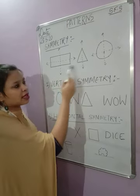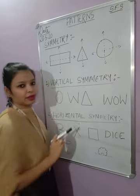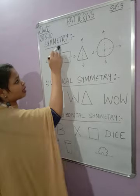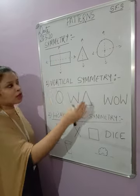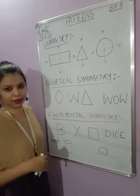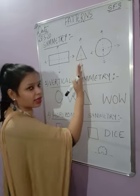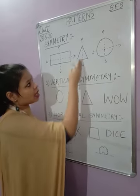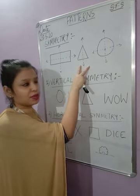I have taken some 2D figures here. The first is a rectangle, triangle, and circle. For the rectangle, when we divide along this line, we get two equal parts — left and right. When we divide in the middle horizontally, we get the top and the bottom. For the triangle, we can divide it in only one way — into left and right equal parts — and we get two symmetrical parts.